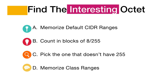So those are the four different ways to find the interesting octet: memorize the default CIDR ranges; count in blocks of eight or 255; pick the octet that doesn't have 255 when given the subnet mask; or memorize the class address ranges. Use whatever method works best for you. When you sit down for the exam and your mind goes blank, finding the interesting octet is the first step.